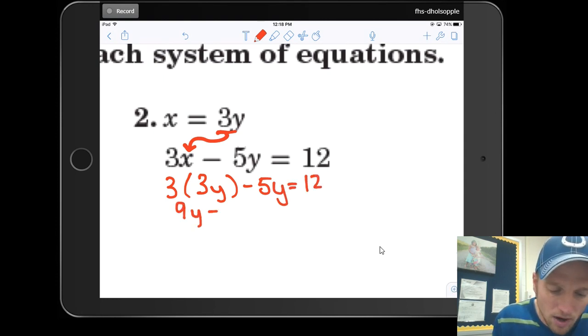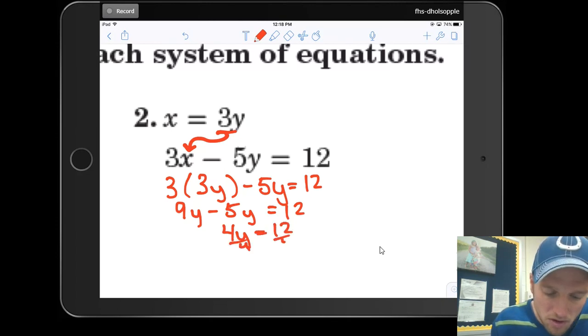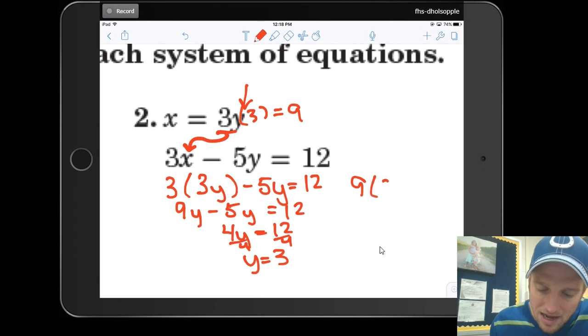Well, that's going to be 9y minus 5y is equal to 12. 9 minus 5 is 4y is equal to 12. Divide by 4, y is equal to 3. So now take 3 and sub it back in for y in that top equation. 3 times 3 is going to be 9. So my answer is going to be 9, 3.